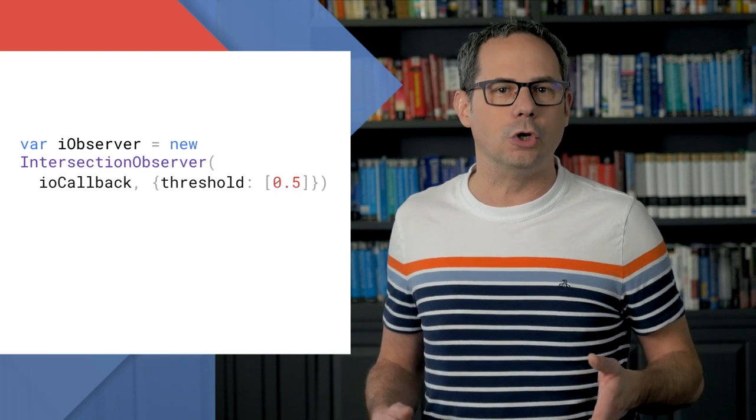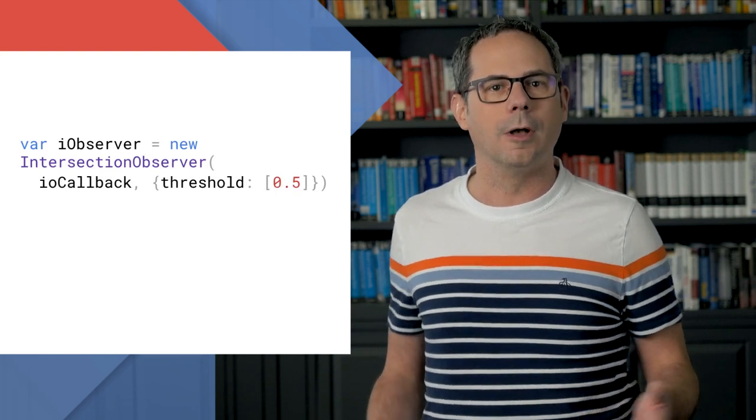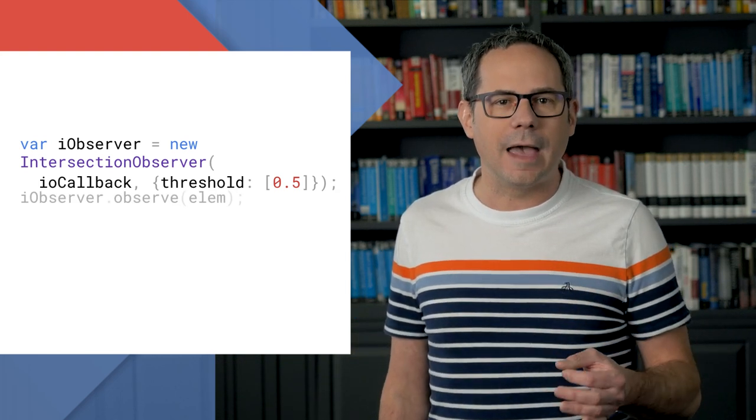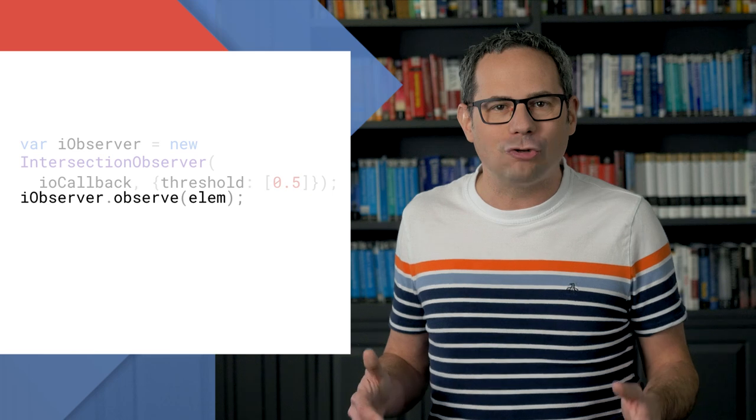To use, simply create a new intersection observer, provide a callback and an options object, then tell the observer which elements to watch. When the element enters or exits the viewport, the callback is fired. Check the description below for a link to a demo, browser support, and more.